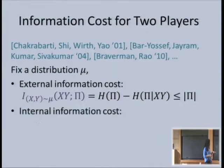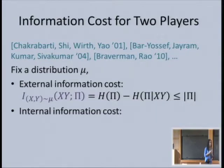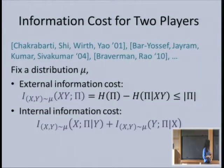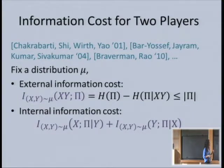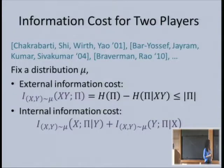Another way to define information cost is the internal information cost—what the players themselves learn. The players have X or Y, so the information cost is what Bob learns about X from the transcript given his input Y, plus what Alice learns about Y from the transcript given her input X.